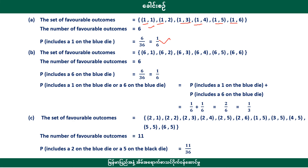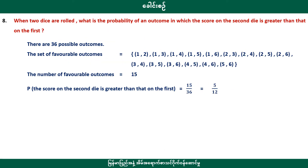Now looking at the blue diamond die: 1 by 6, 1 by 6, 2 by 6, which equals 1 by 3. The probability of the score on the second roll is greater than that on the first: 15 by 36, or 5 by 12.